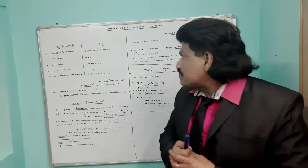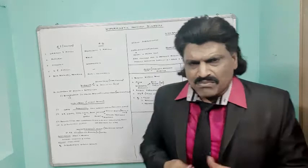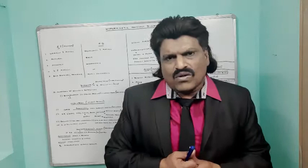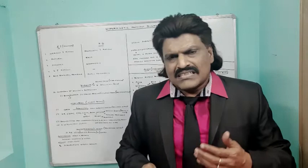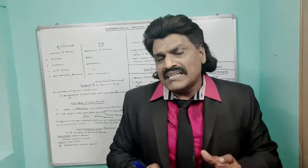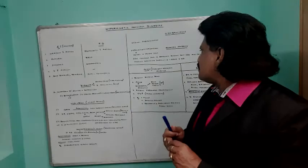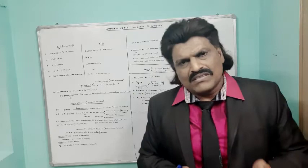Hemiballismus involves a flinging type of movement with the lesion in the subthalamus, and can also be seen in non-ketotic hyperglycemic conditions. Tourette syndrome (Gilles de la Tourette syndrome) presents with vocal tics and motor tics; patients can sometimes have coprolalia — vulgar utterances — though this is less commonly seen in Japanese patients. Tourette syndrome is commonly associated with obsessive compulsive disorder and attention deficit hyperactivity disorder.